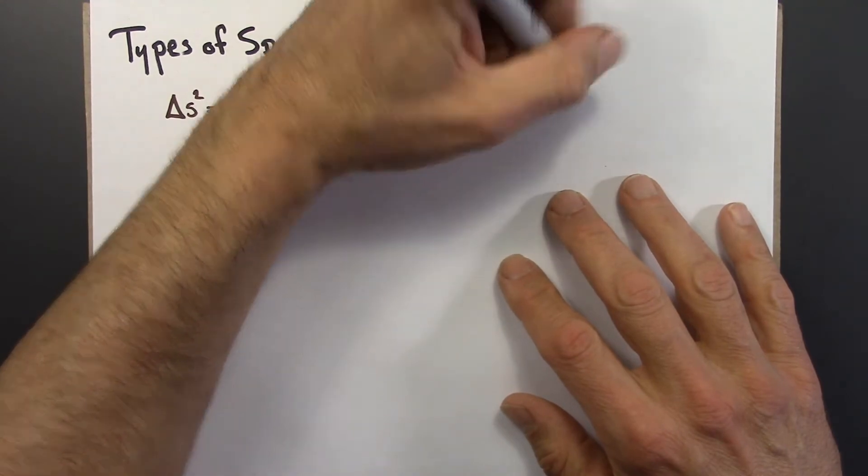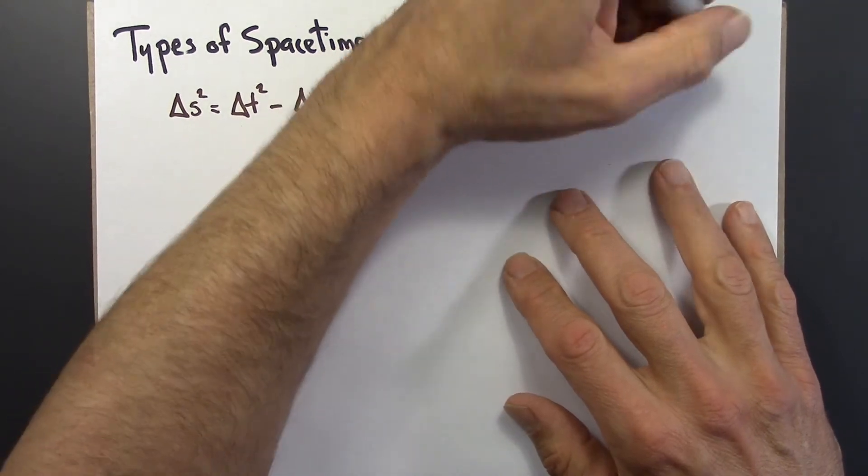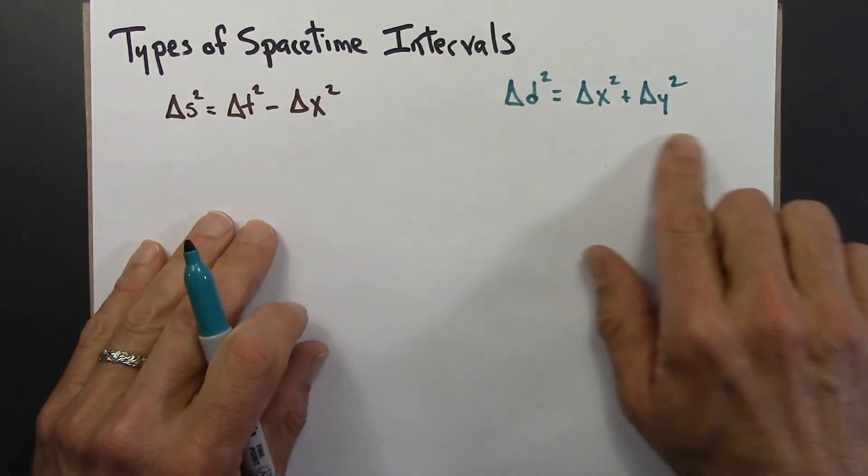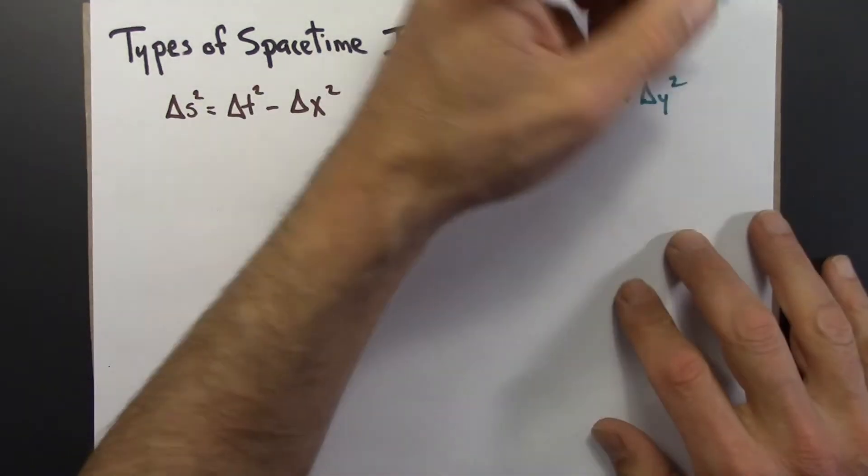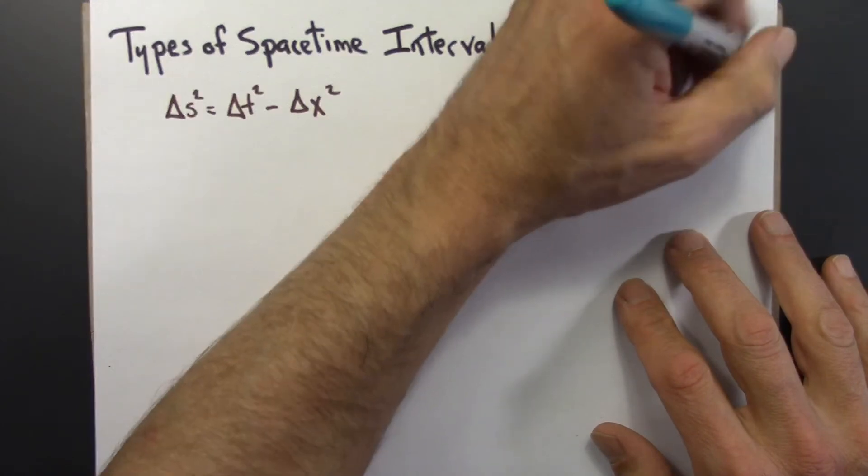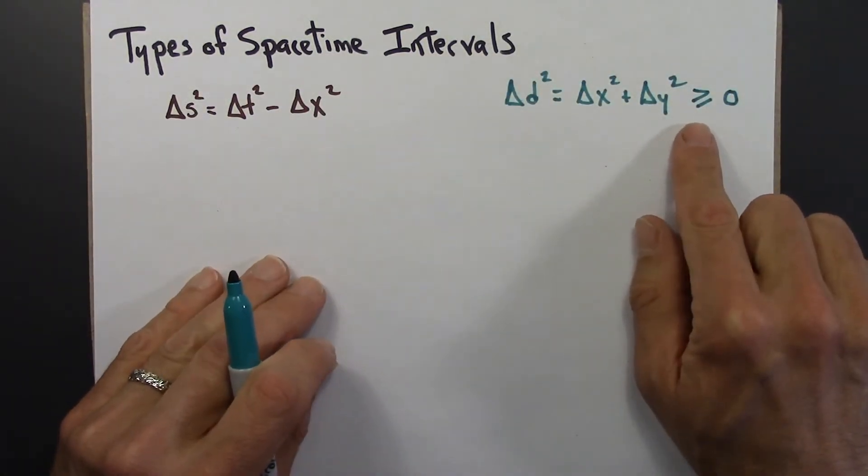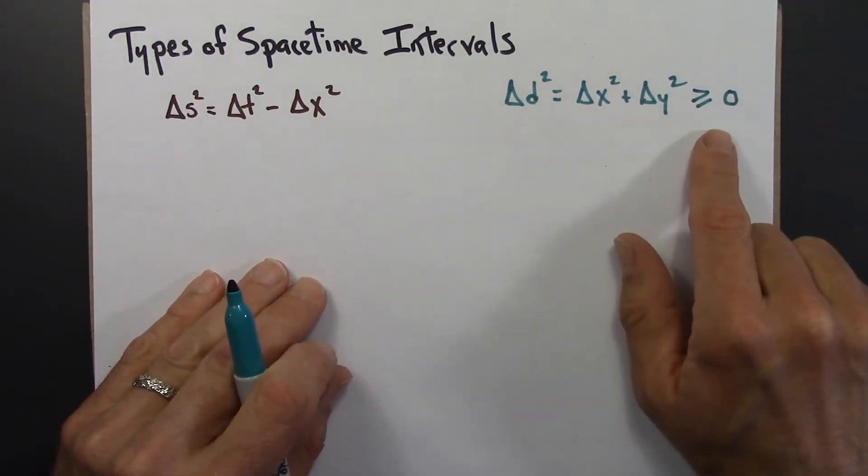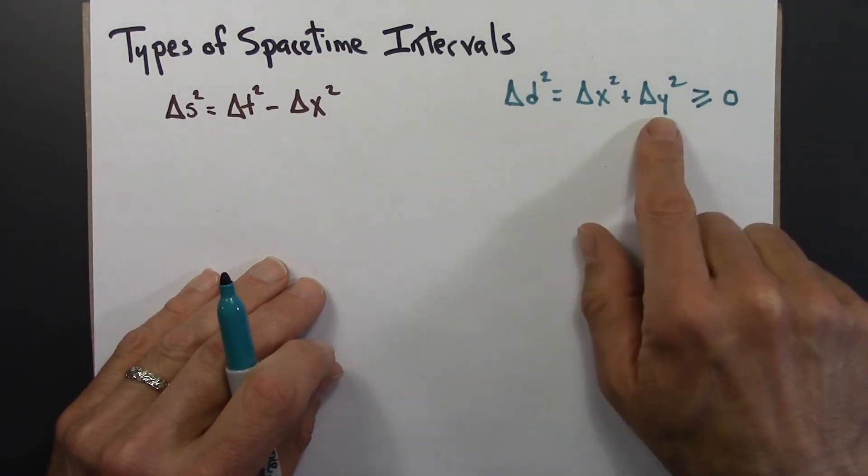So the distance squared is the x difference squared plus the y difference squared. This formula, Pythagoras again. And the thing to note is that this is always greater than zero. Well, it could be equal to zero, but that's kind of a boring case.